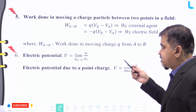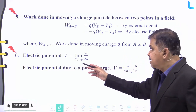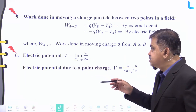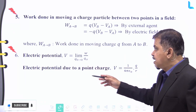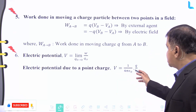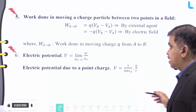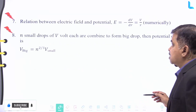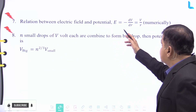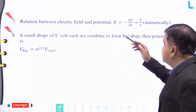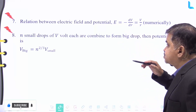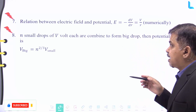The electric potential V is defined as the limit of W/q₀ as q₀ tends to zero. The electric potential due to a point charge is given by V = (1/4πε₀)·(q/r). The relation between the electric field and potential is E = −dV/dr, which numerically equals V/r.